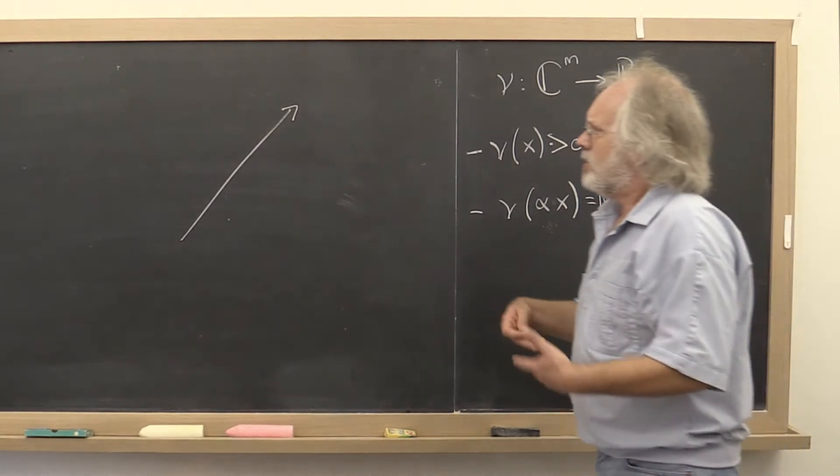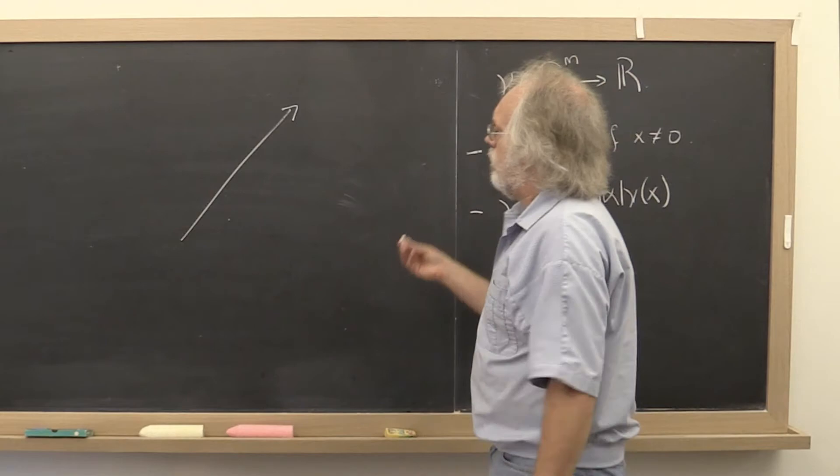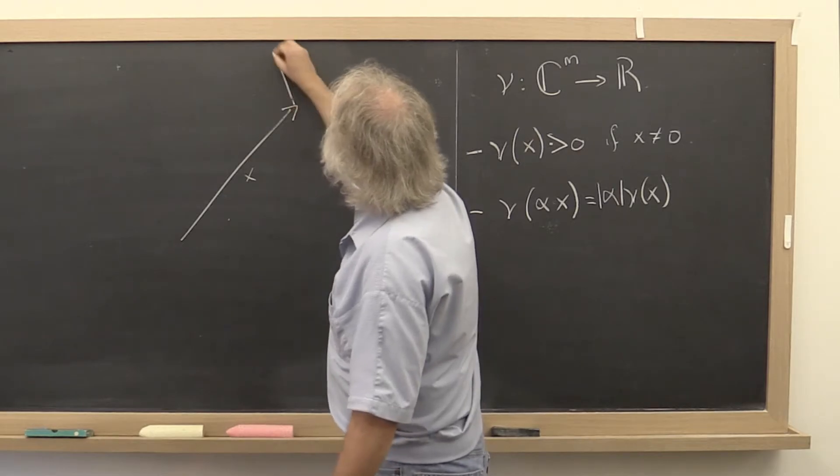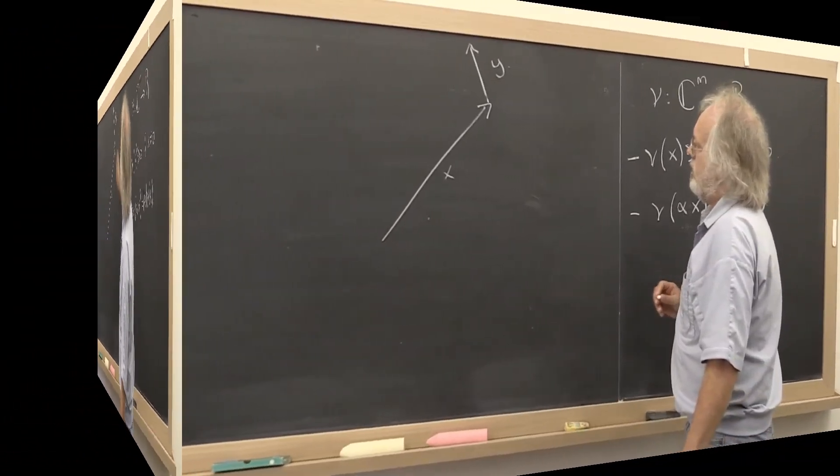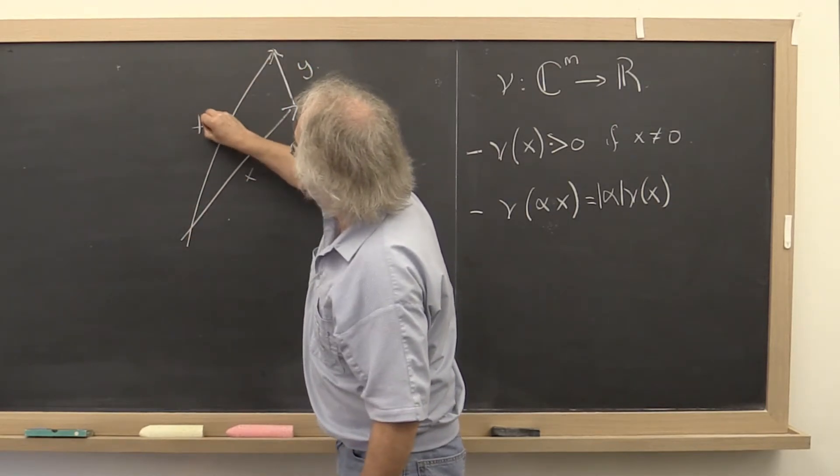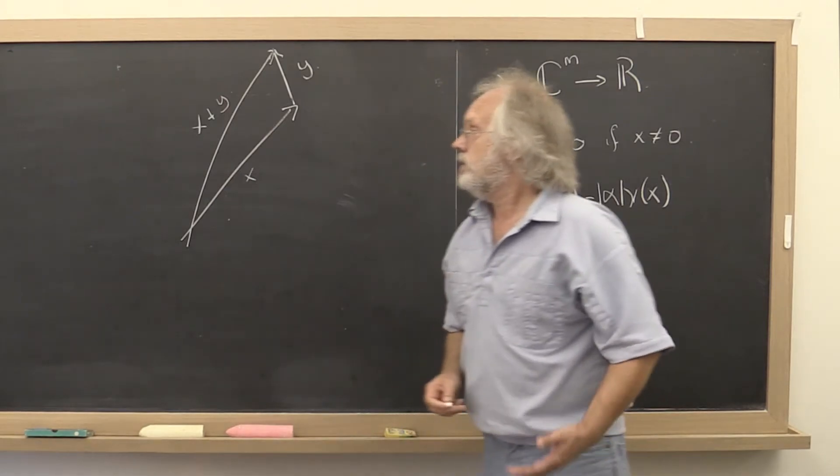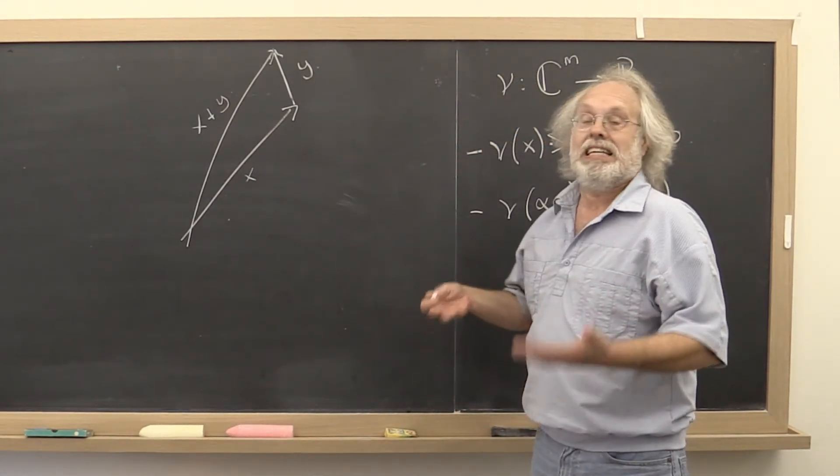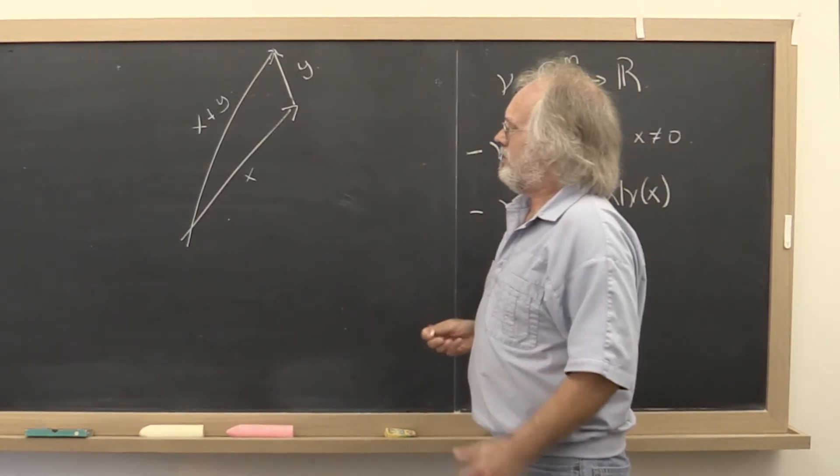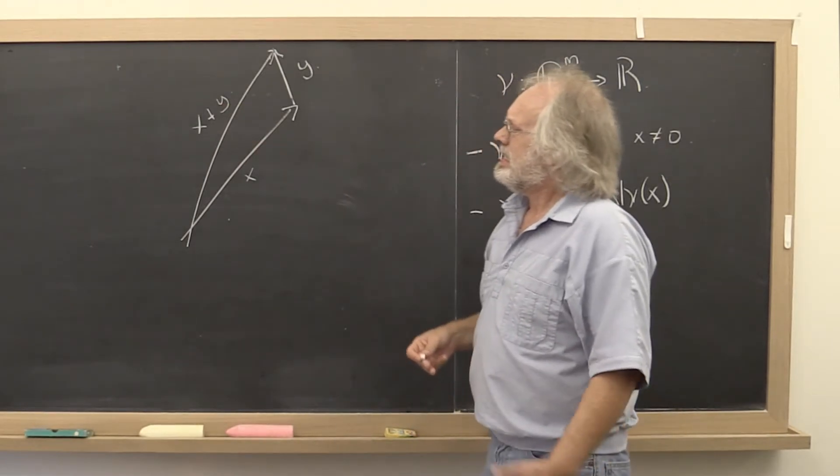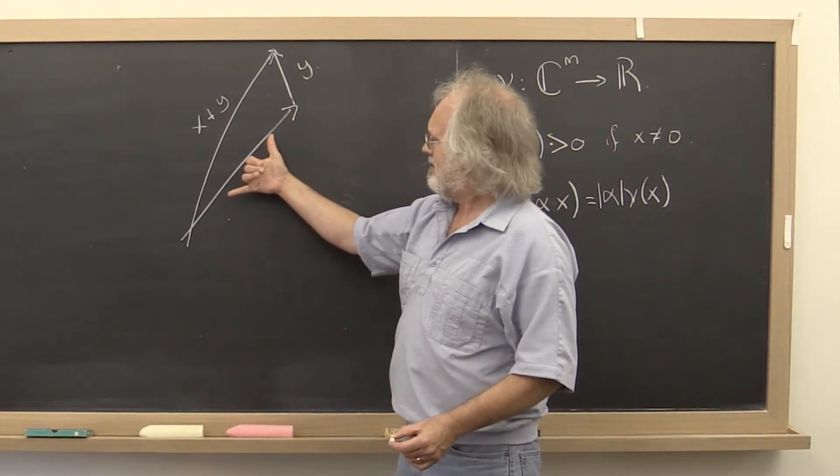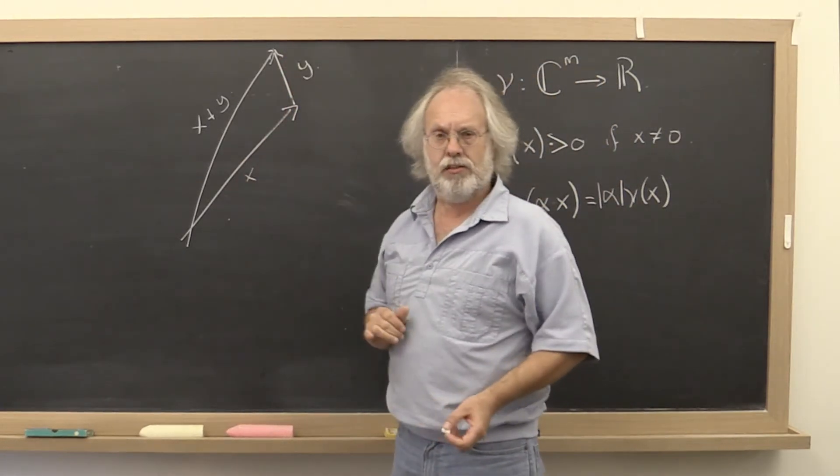Now finally, we're often going to have the case where we have two vectors. Let's call this x and we have a second vector, let's call it y. And then the net result of adding the two vectors together we know is this vector right here. Now it just seems logical that a measure of the length of x plus y should obey that it is no more than the length of x plus the length of y.